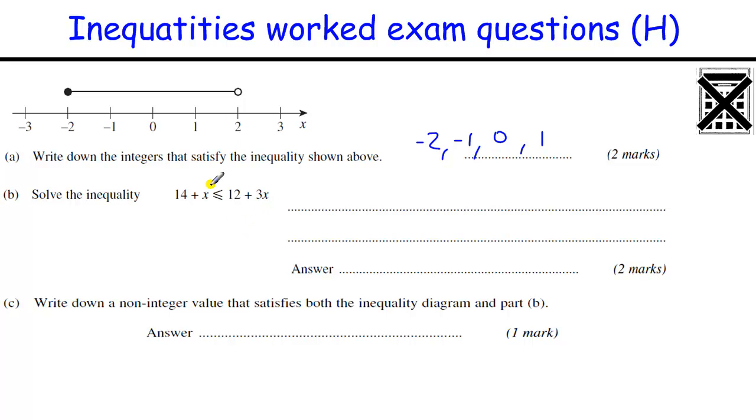Solve this inequality, 14 plus x less than or equal to 12 plus 3x. So take away x from both sides, always move the smaller x when you're trying to solve the equation type things, and then take away the 12, get 2 is less than or equal to 2x, then divide by the 2, to get 1 is less than or equal to x. Now that's fine, but really we should switch it around, so we have x is greater than or equal to 1. We'll just swap those two over, but we must turn the sign around.